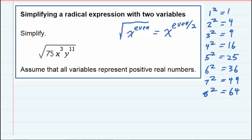We have two parts to this simplification. The first, the 75, is a whole number. So to simplify that, we're going to need to rewrite that as some perfect squares so that we will be able to simplify.